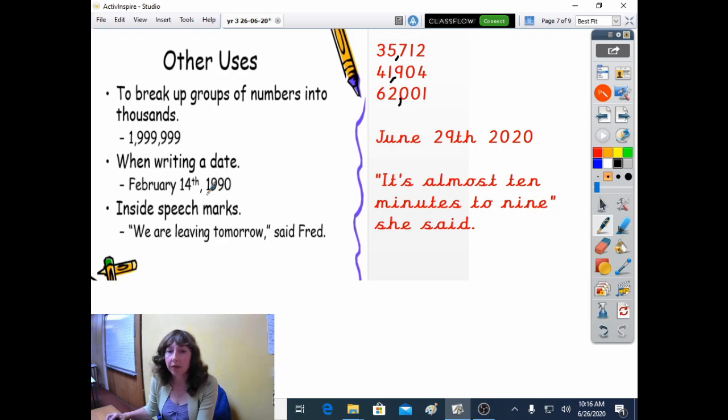Another time you might see commas used is when writing the date. So you can see that in February the 14th, 1990, a comma's just been used to separate those parts of the date.